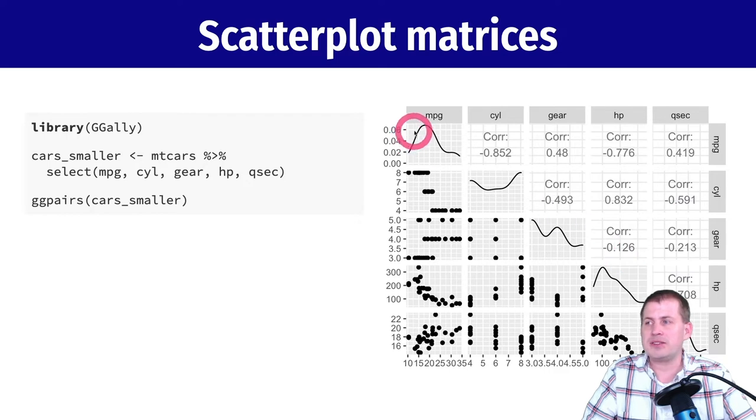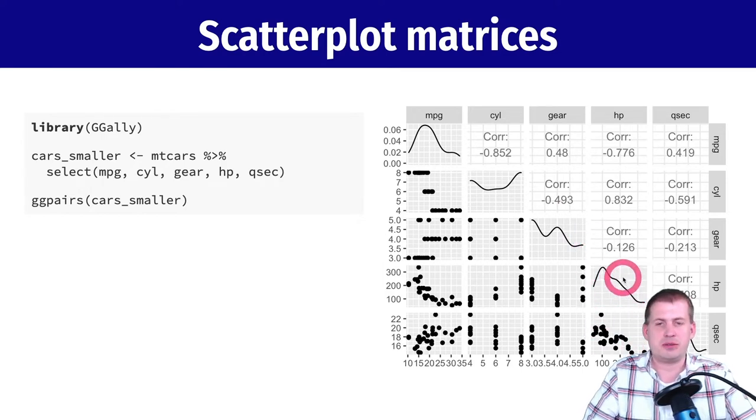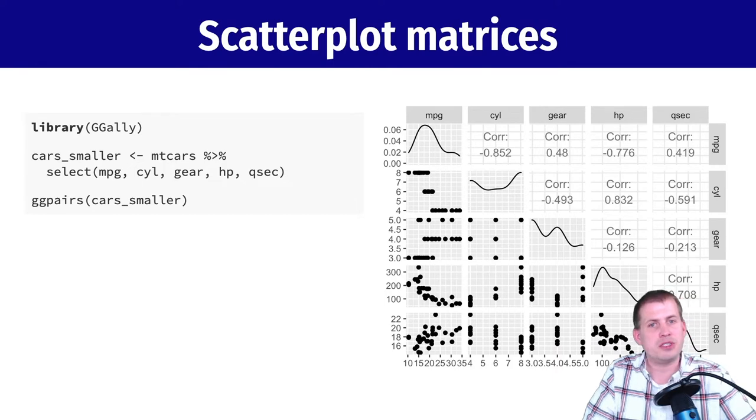It gives you a density plot for each variable just as extra information. You can see miles per gallon is mostly clustered down here. Cylinders: there's some down at four, lots up at eight. With gear there's three, four, and five. Horsepower: there's lots of 100 horsepower then it starts dropping down to 300. You can see information about the variable by itself, but you can also see how each of these pairs of variables are related, which is cool.